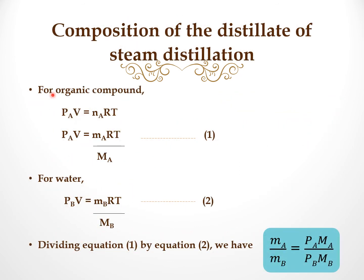For organic compound A, using the ideal gas equation, we get PAV equal to NA RT. Here PA is the vapour pressure of A, V is the volume, NA is the number of moles of A, R is the gas constant, and T is the thermodynamic temperature. The number of moles can be replaced by mass over molar mass. So we get PAV equal to MA times RT divided by MA.